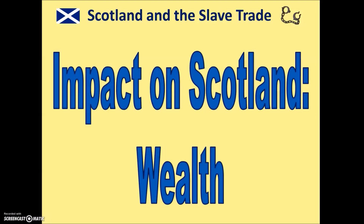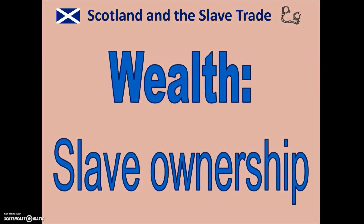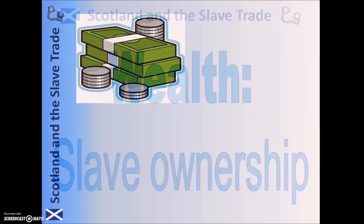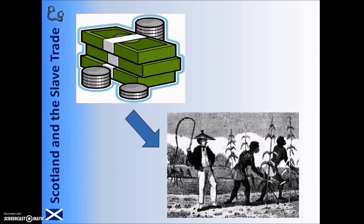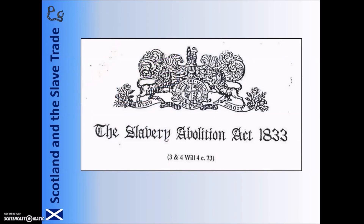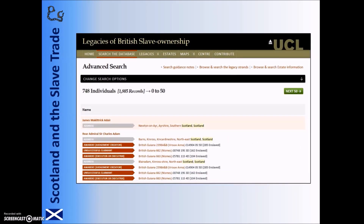We are now going to consider all the different ways that Scotland benefited from the trade, starting off with the issue of wealth. There were lots of different ways that Scots made their money through the slave trade, and one of them was slave ownership. Some of them were owners of slaves, even though in many cases they had never left Scotland and would never actually come into contact with a slave. Many essentially bought a share in a slave and the produce they would make each year, using this as an annual income — for some, in place of a pension. When slavery was outlawed in the British Empire in 1833, the owners of these slaves received compensation for the loss of their so-called property.